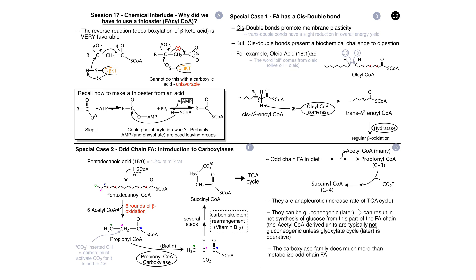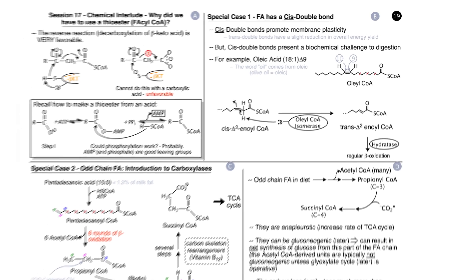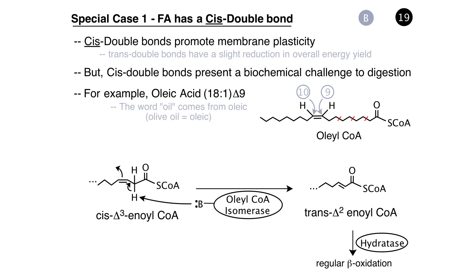We're now at Storyboard 19, Panel B. In the last lecture, I mentioned that we're going to be looking at several special cases with regard to the metabolism of fatty acids. The first special case concerns the metabolism of fatty acids that can already contain a double bond. You remember from last time that a double bond with a trans configuration forms naturally during beta oxidation. In the special case we're going to look at now, the double bond has a cis configuration.